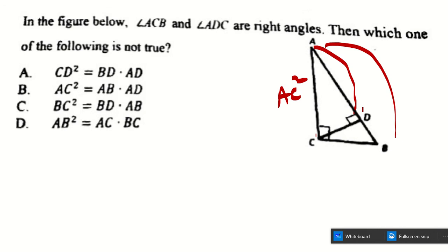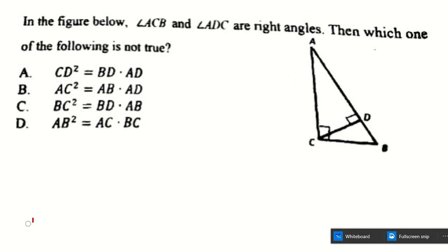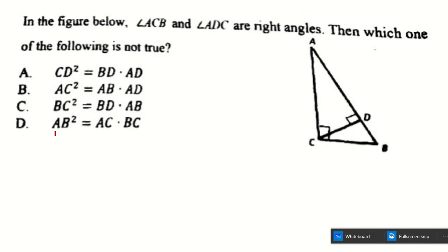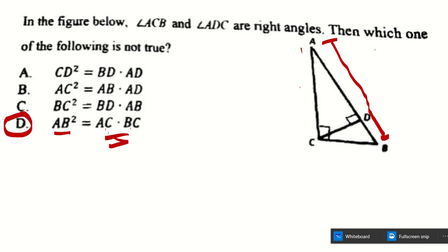Checking further: AC squared equals the adjacent segment AD times the whole hypotenuse AB — correct. BC squared equals BD times BA — correct. But choice D says AB squared equals AC times BC. By Pythagoras, AB squared should equal AC squared plus BC squared, not AC times BC. So choice D is the one that is NOT true. The answer is D.